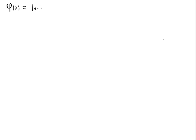We are going to solve this dynamic programming problem for a risk-averse utility function. The function we choose is φ(x) equal to natural log of x, and this is what we're going to work with.